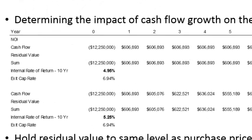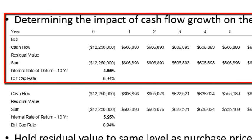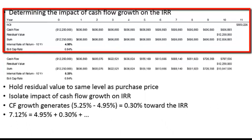We now need to determine the impact of cash flow growth on the internal rate of return. We have two cash flow summaries to help with that. The top scenario: acquire the asset for $12.25 million, hold the year one cash flow static throughout the entire 10-year analysis, and hold the residual value equal to what we paid. In effect, what is the IRR assuming no cash flow growth and no change in residual value? This gives us our base IRR of 4.95%.